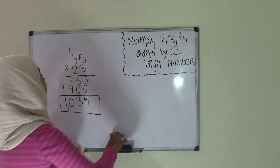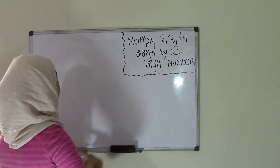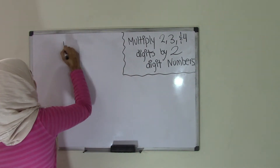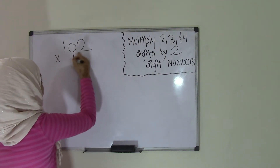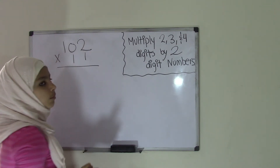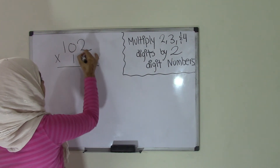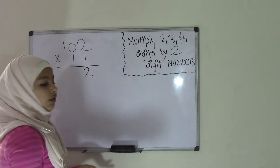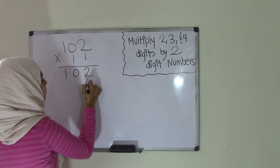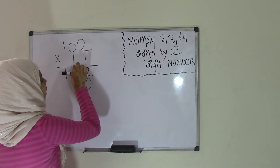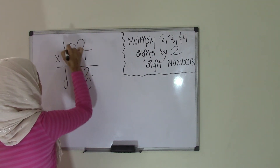Now how about a 3-digit number times a 2-digit number? For instance, let's say our 3-digit number is 102 times our 2-digit number, which is 11. So 102 times 11 — remember, right to left. First comes 1 times 2, which is 2. Then 1 times 0 — remember, any number times 0 equals 0. So 1 times 0 is 0. And 1 times 1 is 1. Now remember, put a 0 here in order to move to the tens place. So now we have 1 times 2 is 2, 1 times 0 is 0, 1 times 1 is 1.